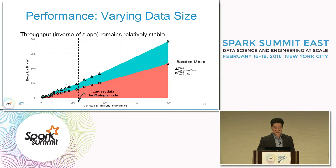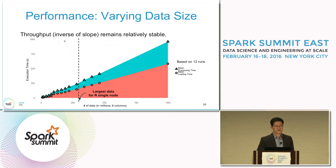As you can see, the slopes are almost the same and relatively stable, so we can expect that the throughput—which is the inverse of the slope—remains relatively stable.